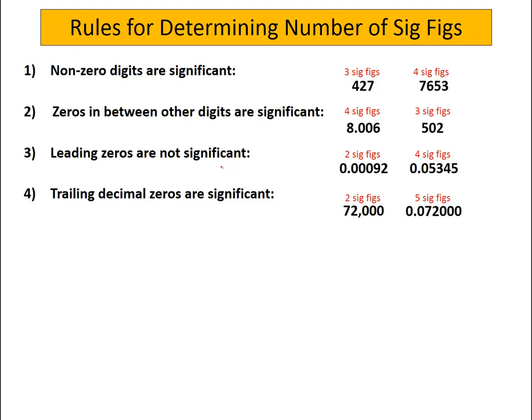So zeros in between other digits are significant. So in the number 8.006, the zeros inside in the middle there tell us something about the precision of the number, and so those are indeed significant figures. So we'd say this has four significant figures.